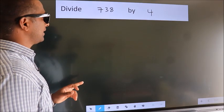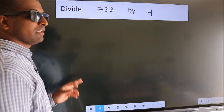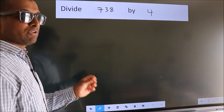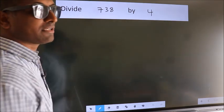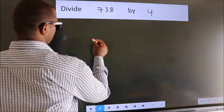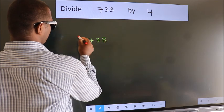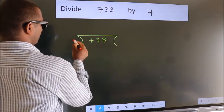Divide 738 by 4. To do this division, we should frame it in this way: 738 here, 4 here.